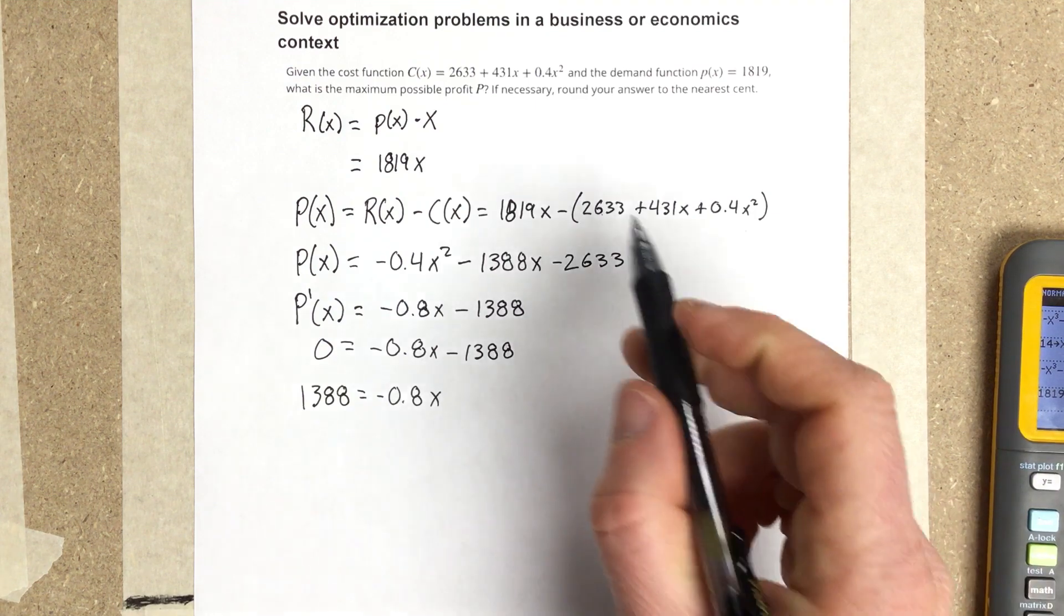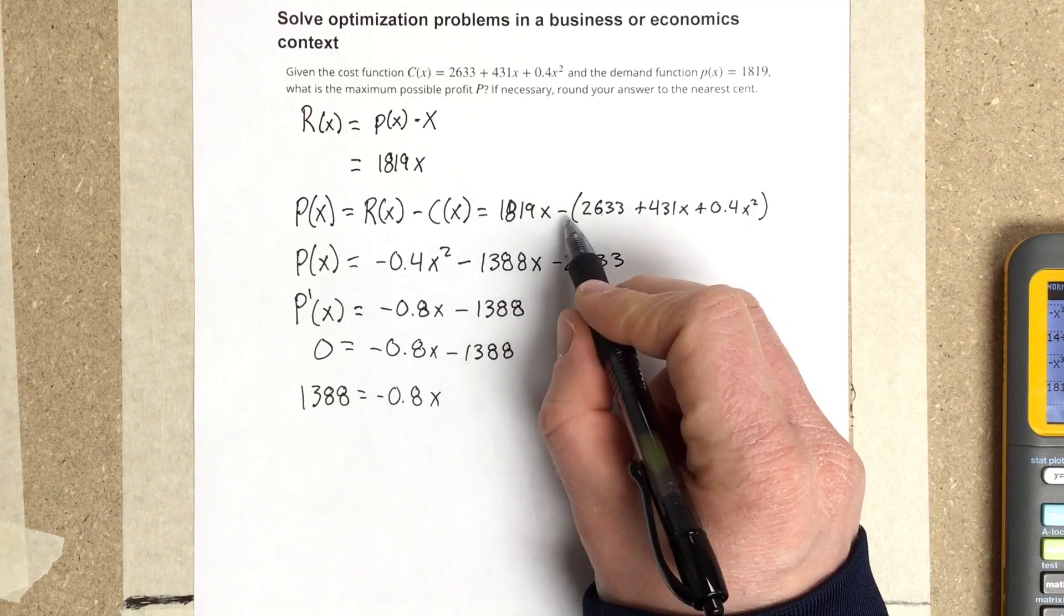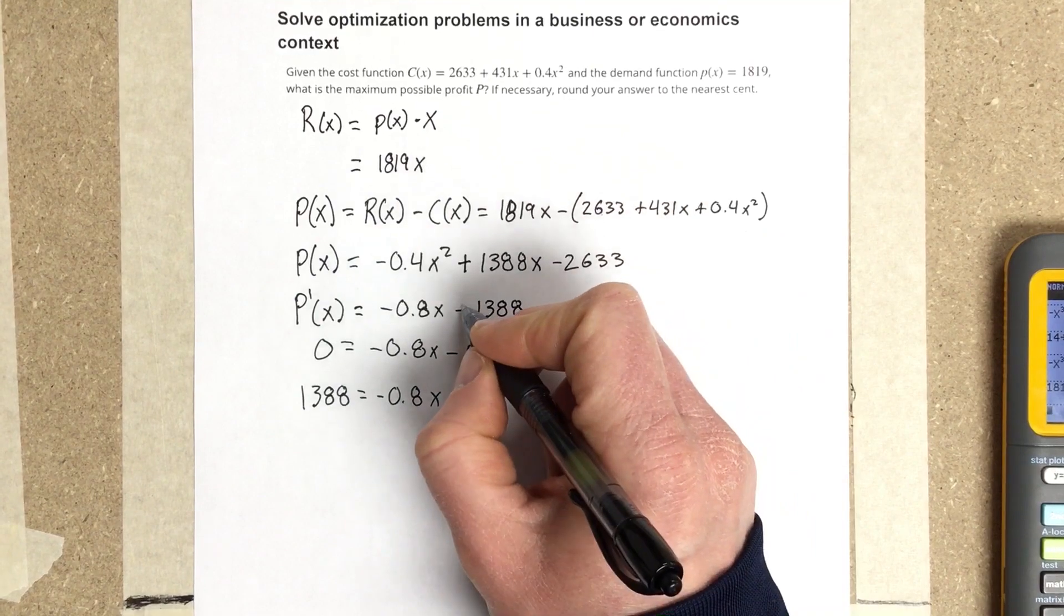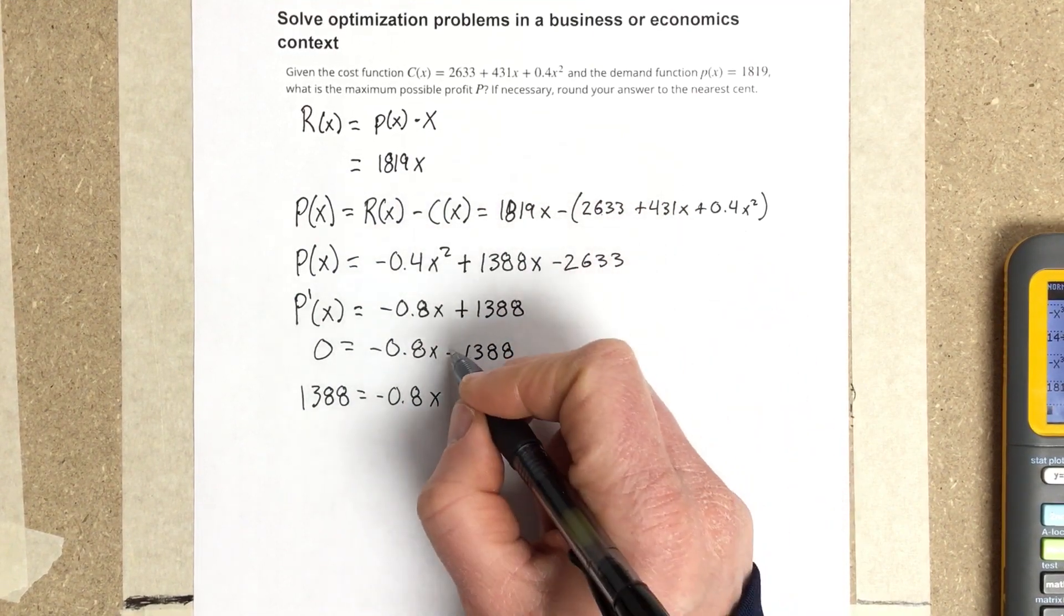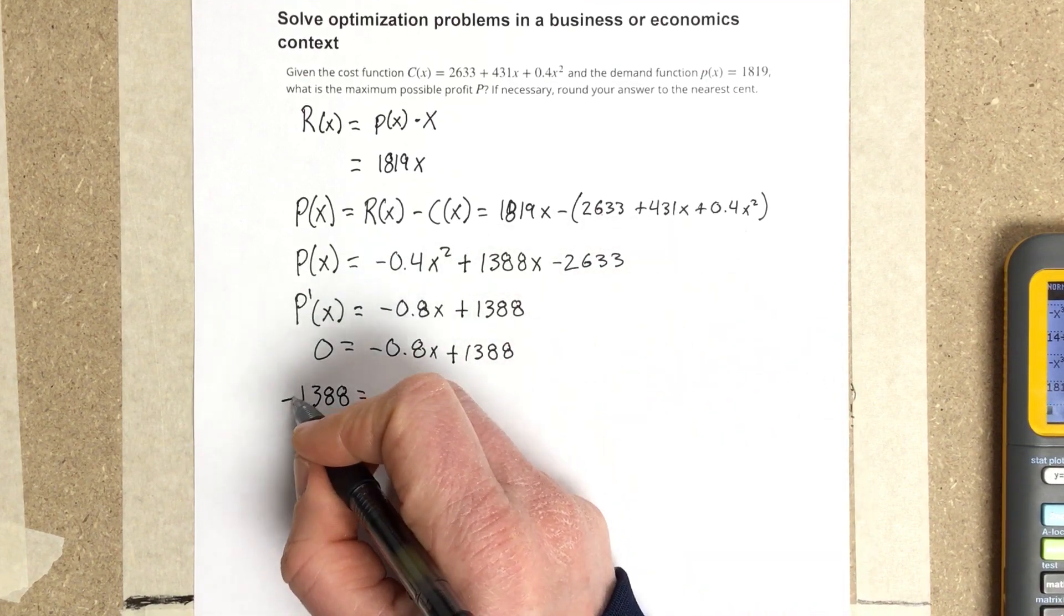Let me correct this: 1819 minus 431 gives positive 1388x in the profit equation. So the derivative is P'(x) = -0.8x + 1388, which rearranges to -1388 = -0.8x.